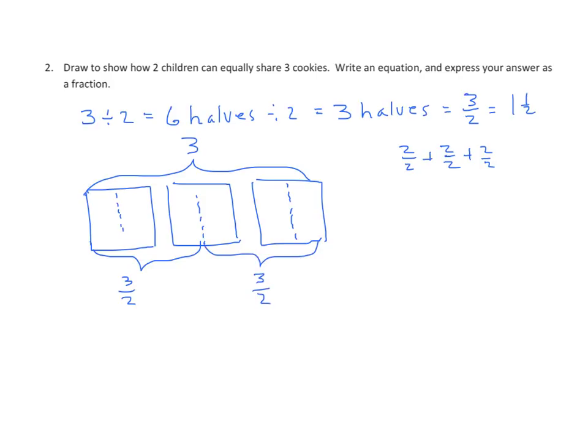Now note, we could do this a couple ways, right? We could keep each one of these cookies whole here, and then divide this cookie into two halves. And then each one is going to get one whole and one half. Or we could take all three of these cookies, break them all in half, and we'd get three halves. The value is the same. We might do different things under different circumstances. But in either case, we get one and a half equals three halves.